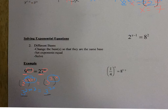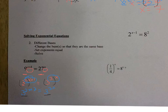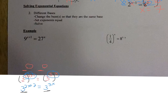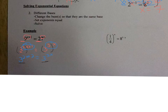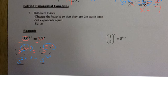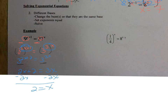Now they have the same base — both base 3. So I set them equal to each other: 2x plus 2 equals 3x. Subtract 2x: 2 equals x. So x is equal to 2.